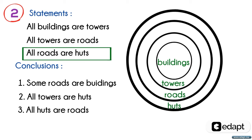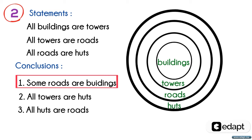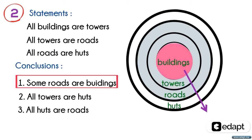Now we get the Venn diagram for the corresponding statements. Let's check which of the following conclusions are true or false. Starting from the first: some roads are buildings means that some portion of roads are included in buildings. Yes, it's a true statement, as there is a portion of roads which are buildings.